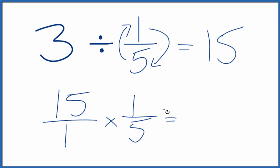15 times 1, that's 15. And then 1 times 5, that's 5. 5 goes into 15 3 times, which is what we started with up here. So we've correctly divided 3 by 1 fifth, and we get 15, and we checked our work.